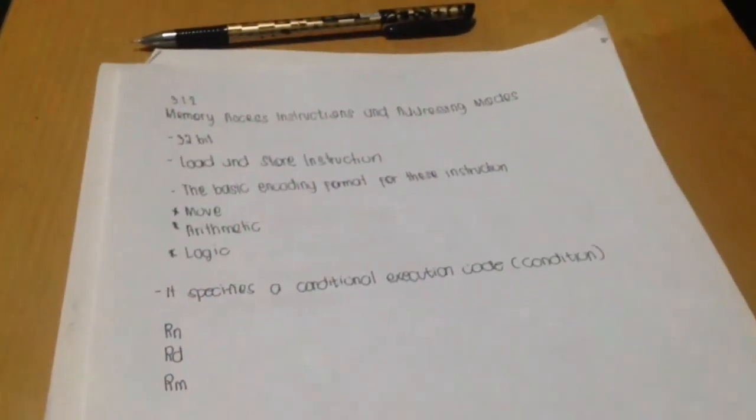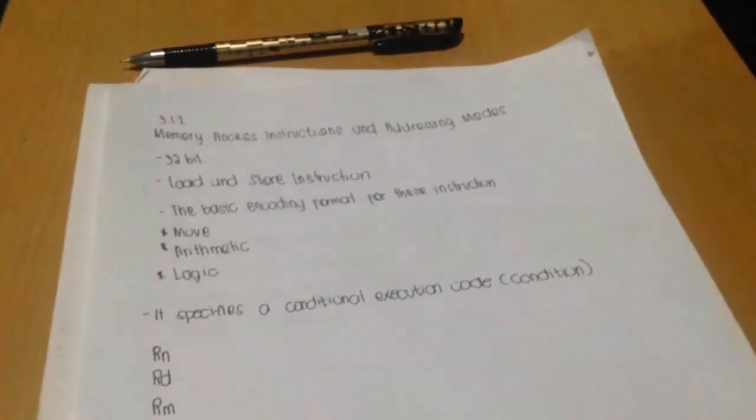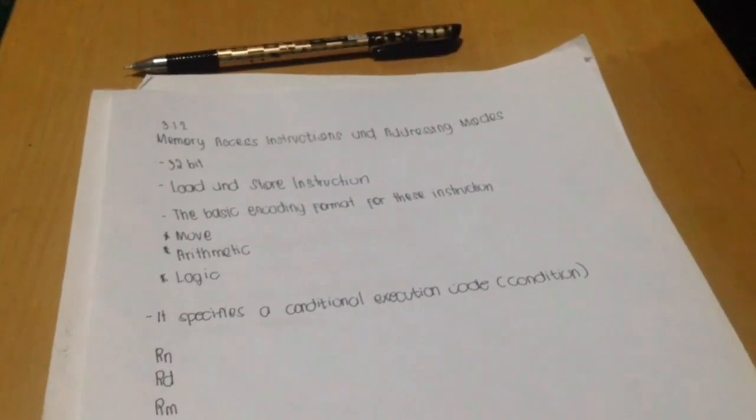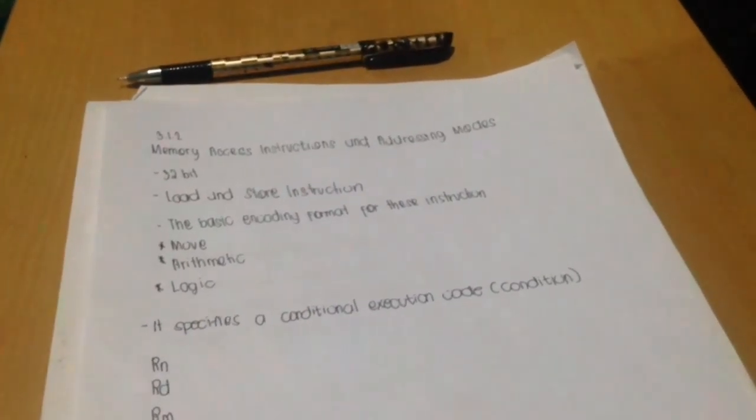In a load instruction, the operand is transferred from the memory into the general purpose register name. In the store instruction, the operand is transferred from RD into the memory.